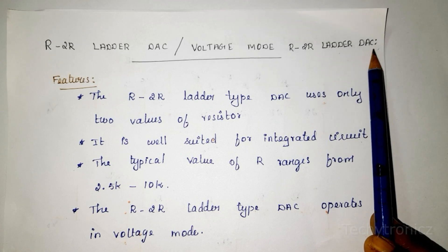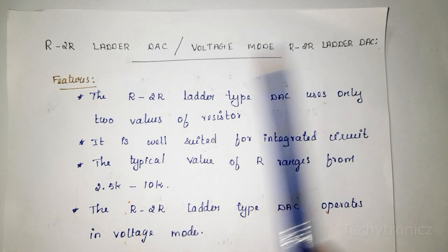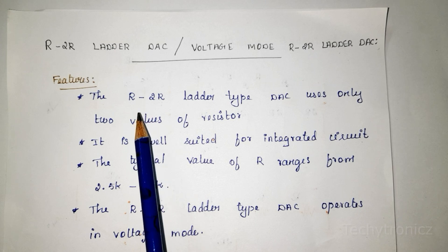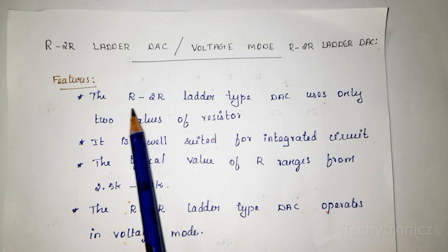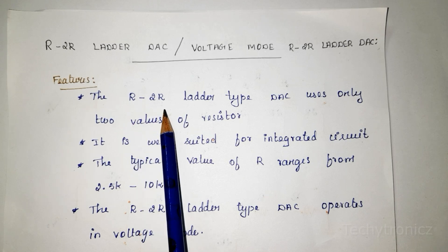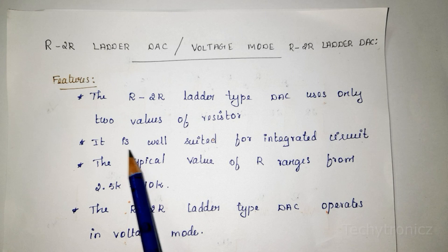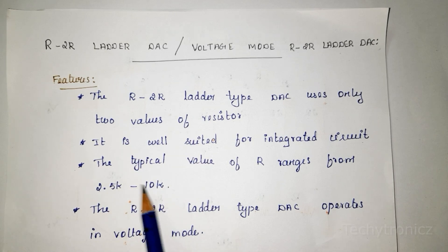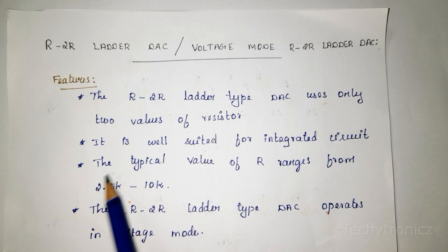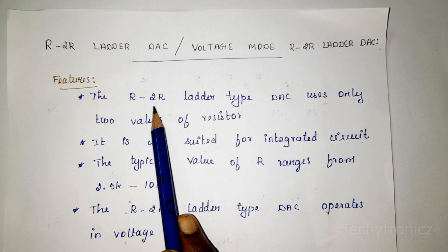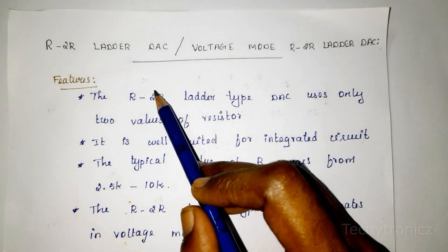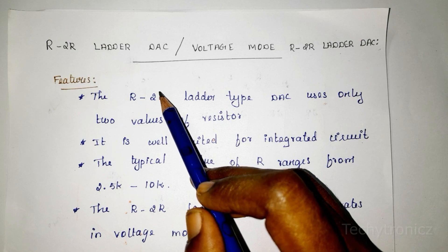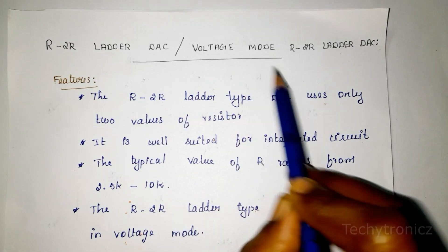Let us see the use of R2R Ladder. In this DAC, we are using two values of resistor — that means the value of resistor is R and 2R. The range of resistor is from 2.5k to 10k. For example, if R value is 2.5k, then 2R value is 2.5 times 2, that means 5k. So only two values of resistor are used in this type.